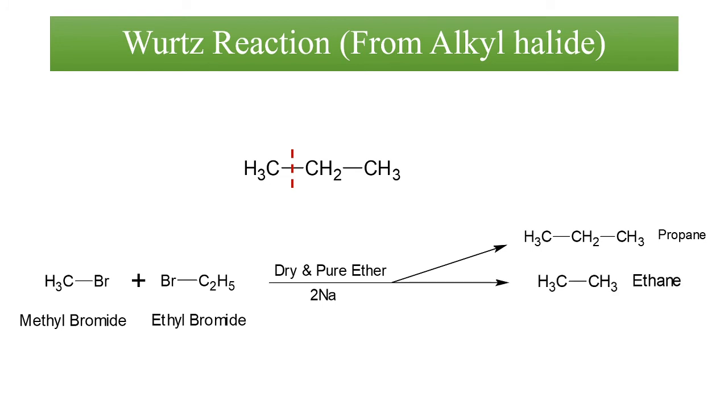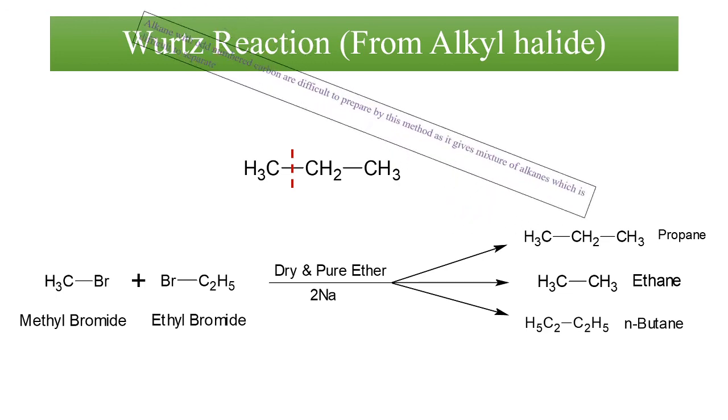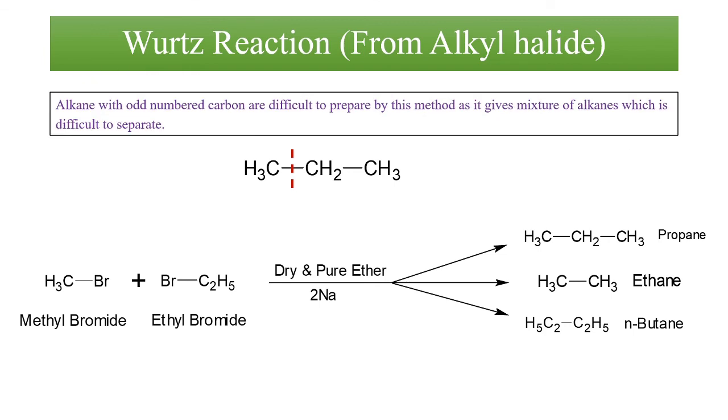But there is an equal chance that methyl can combine with methyl only to give corresponding ethane, whereas if the ethyl group will combine with itself, it will give us formation of n-butane. So rather than getting one single product, I am coming across a mixture of alkanes which is difficult to separate. Hence, this reaction cannot be used for the preparation of odd-numbered carbon containing alkanes because this gives us formation of mixture of alkanes rather than a single alkane.